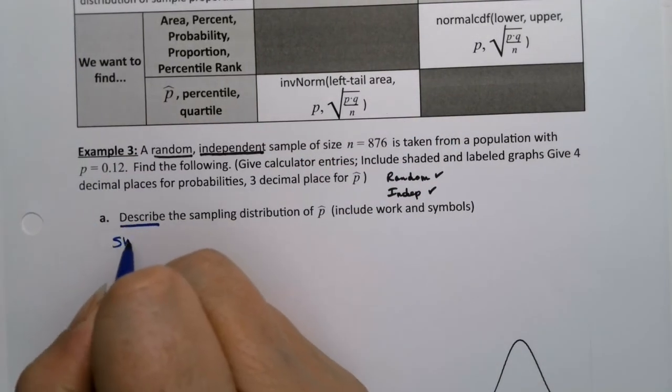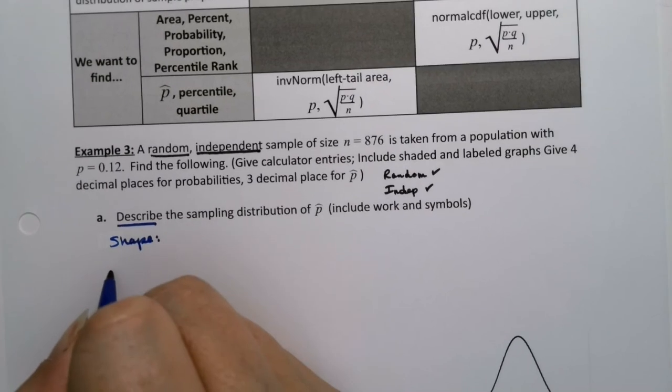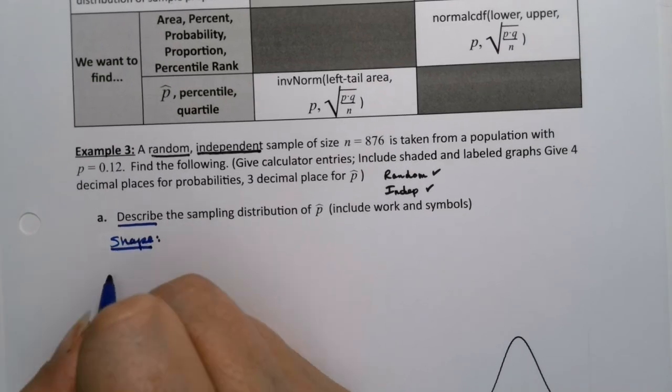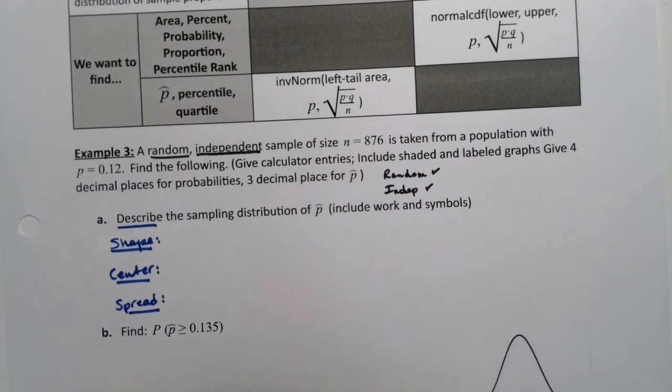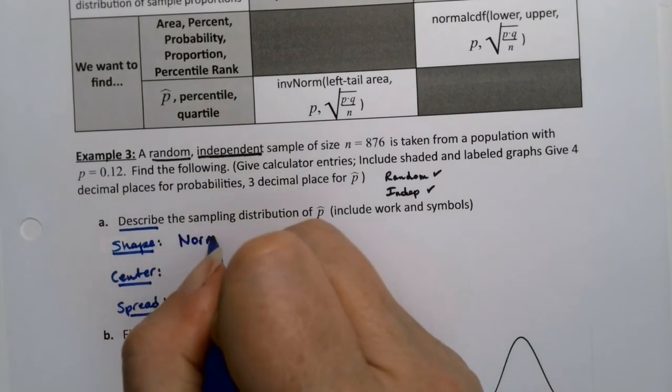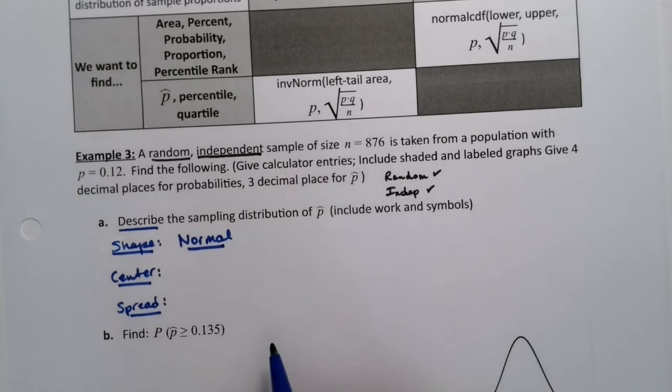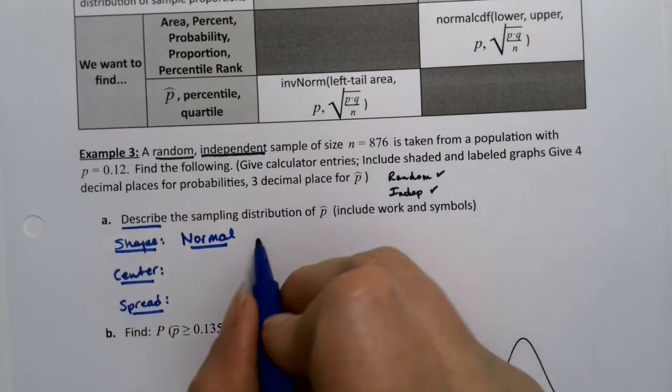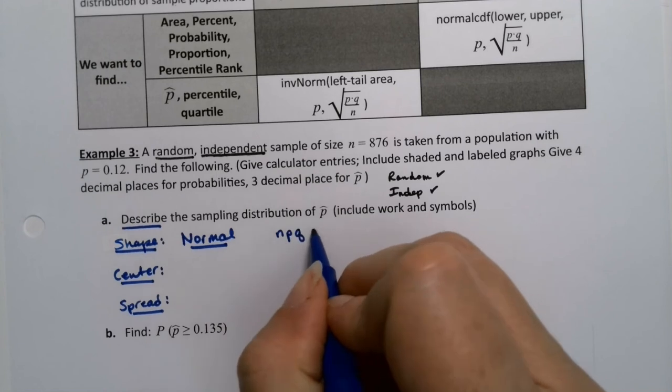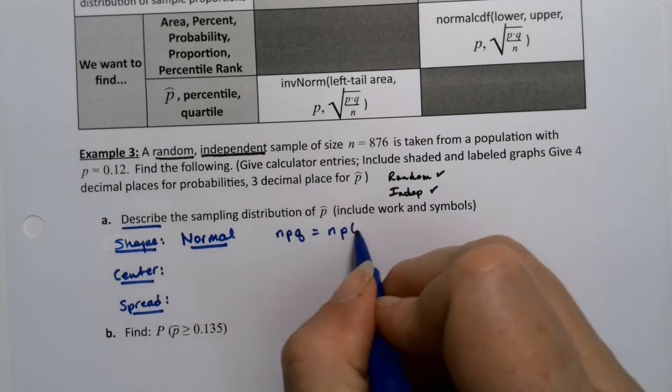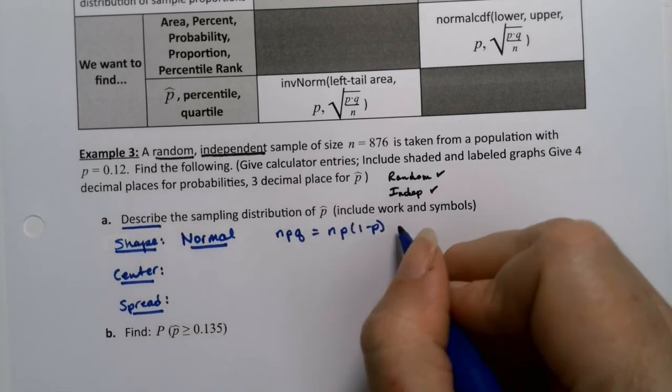I need to know that the shape describing the distribution—shape, center, spread. They want us to describe shape, center, and spread. Well, the shape is going to be normal, but we're going to have to prove it. You can't just say it; you have to prove it.